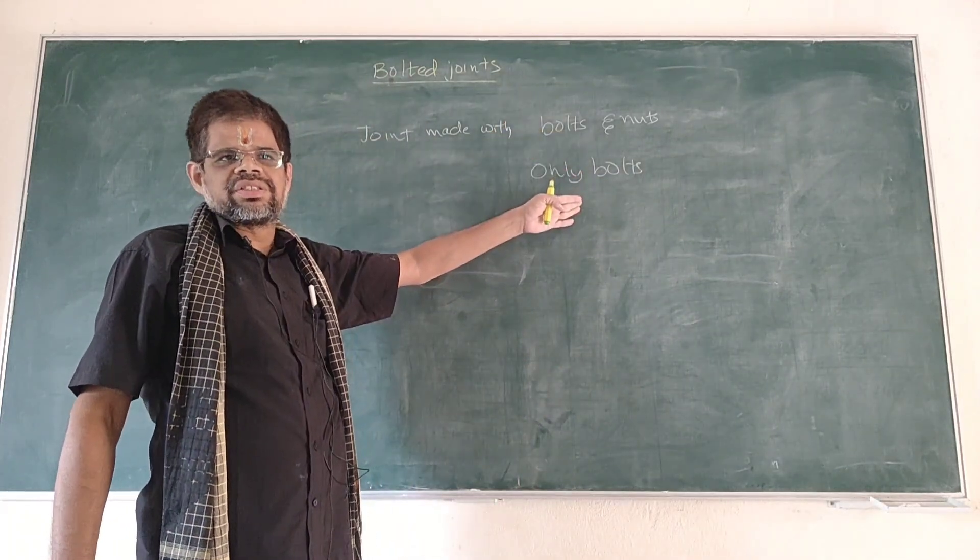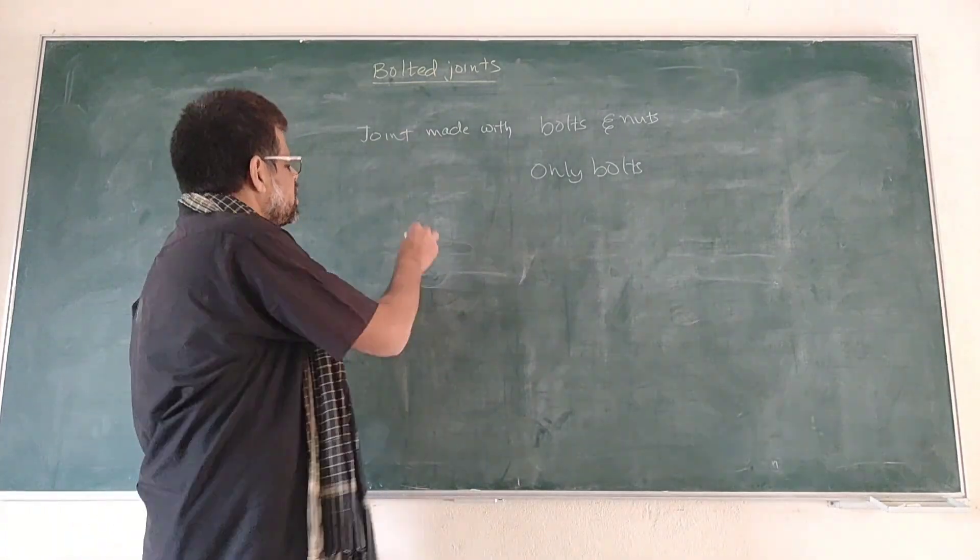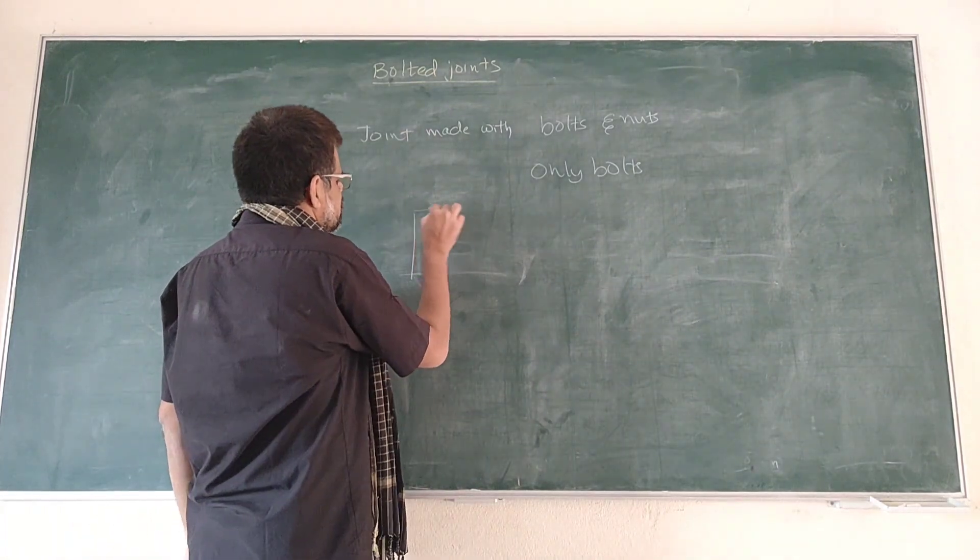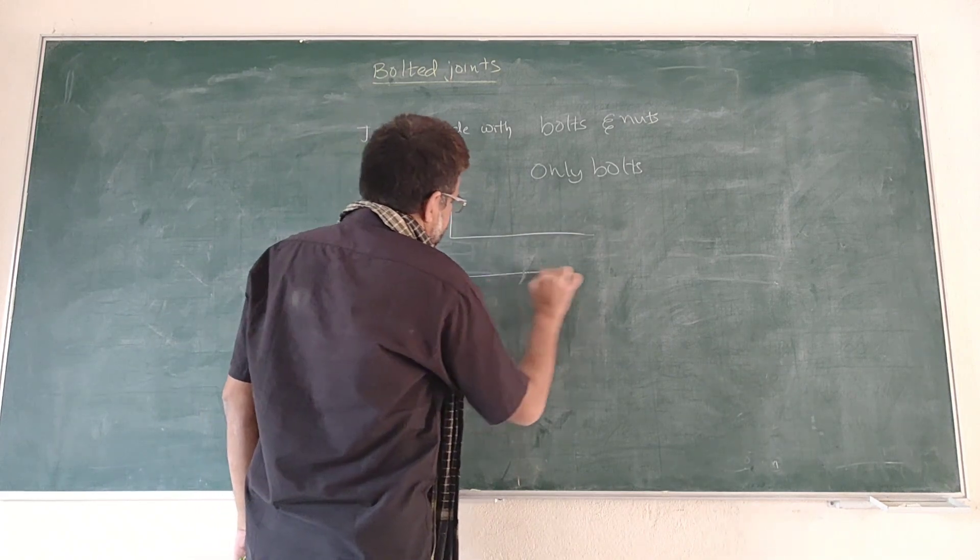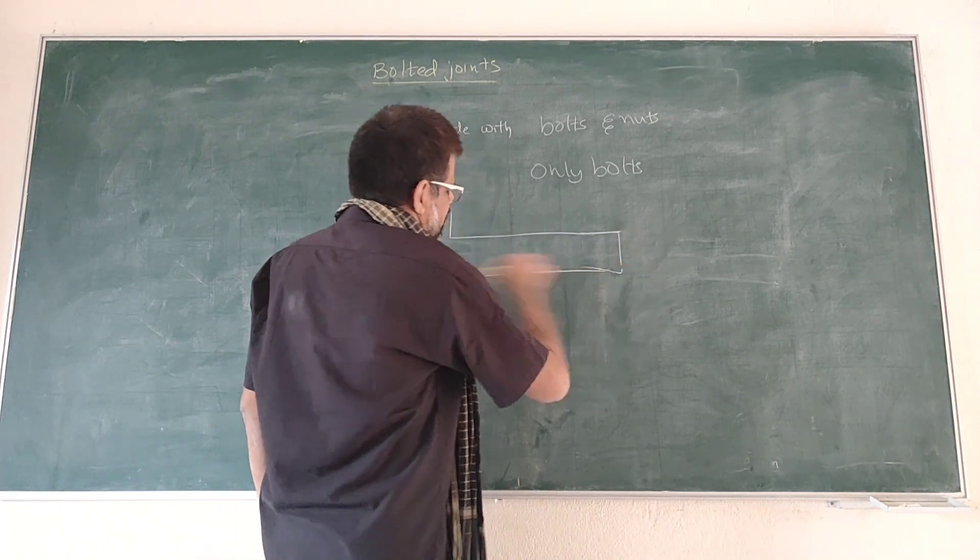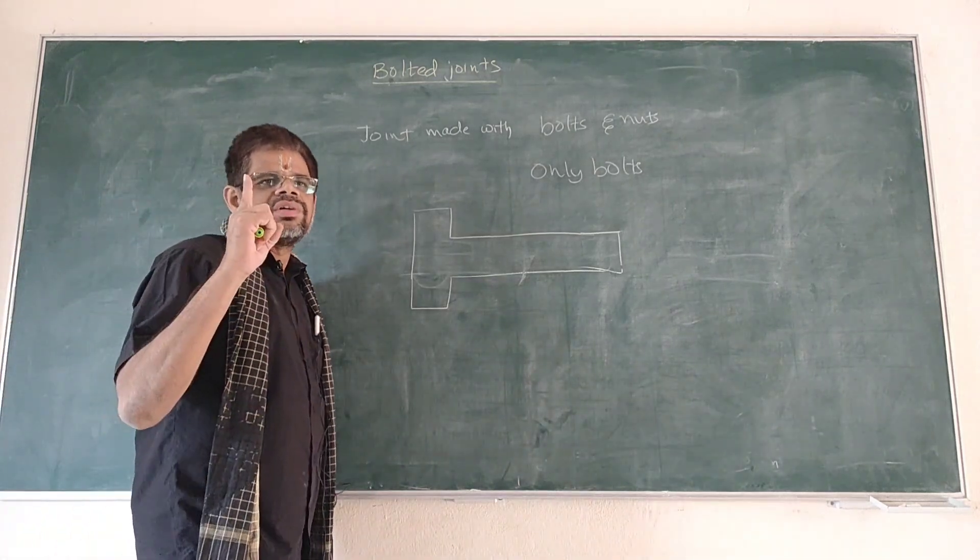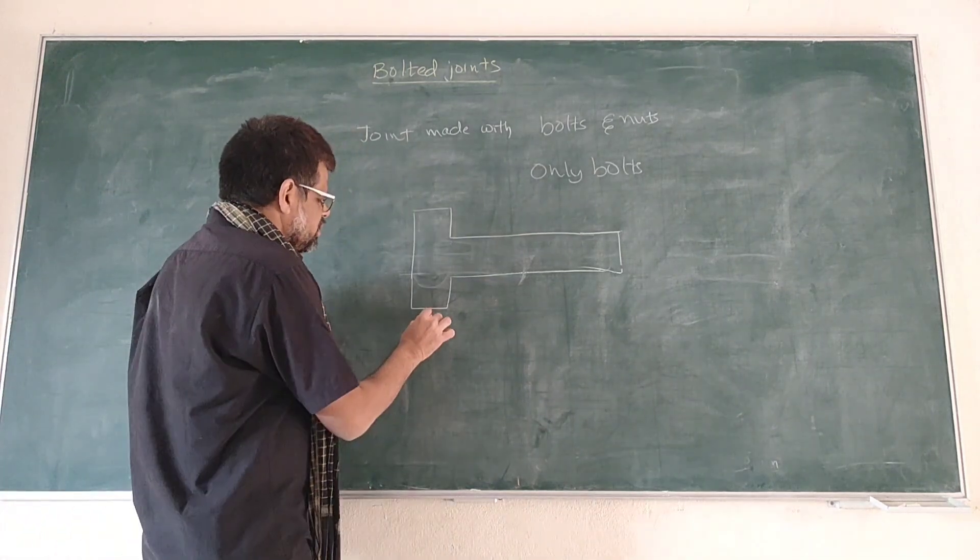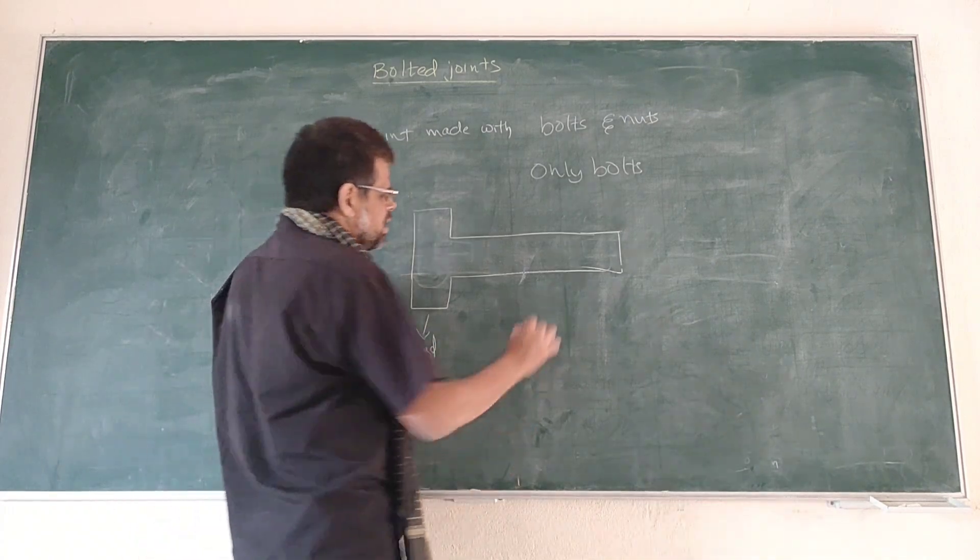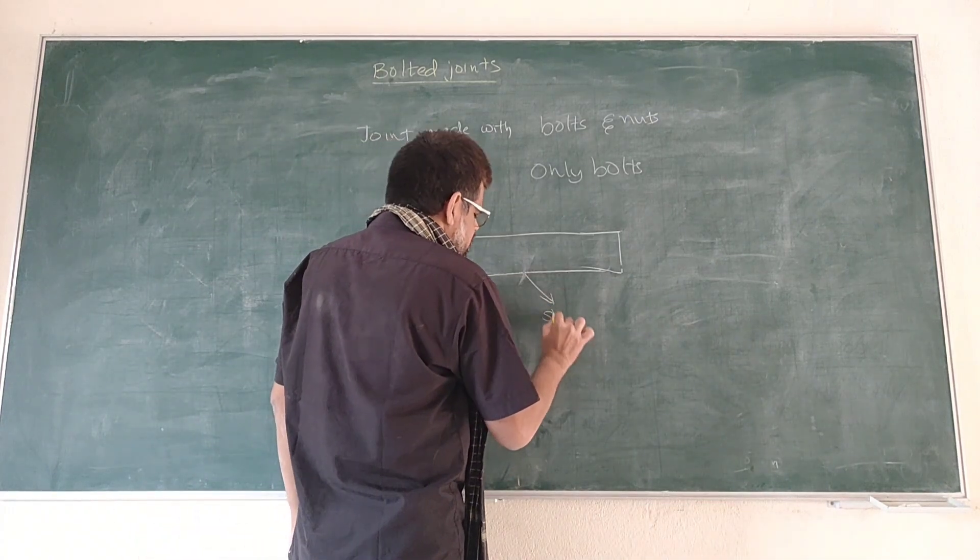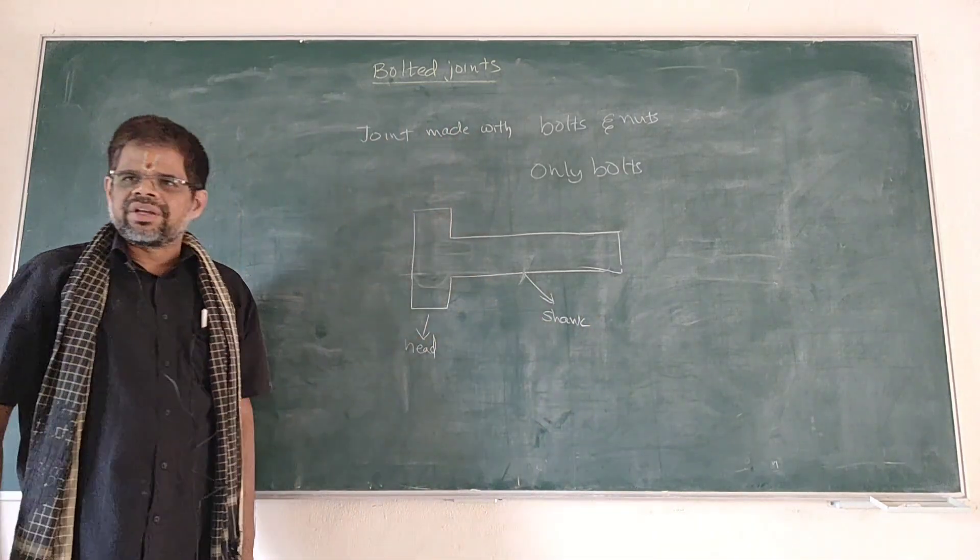This bolted joint consists of a bolt like this. This bolt consists of two portions. This one is called the head of the bolt, and this is called the shank of the bolt. We have discussed all these things in machine drawing. This is the head of the bolt and this is the shank of the bolt.